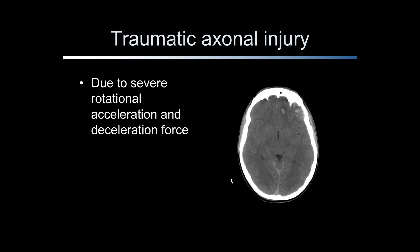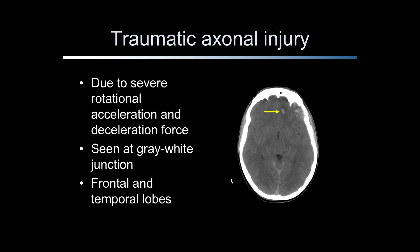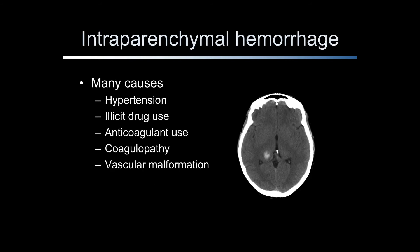Traumatic axonal injury, formerly called shear injury, occurs from severe rotational, acceleration, and deceleration forces to the brain. It is usually seen at the gray-white matter interface and most commonly occurs in the frontal and temporal lobes. Hemorrhagic traumatic axonal injuries appear as collections of acute blood a few millimeters to several centimeters in size. 25% of axonal injuries are hemorrhagic. Non-hemorrhagic axonal injuries may be difficult to see on CT scan and are better visualized on MRI. Intraparenchymal hemorrhage may be due to hypertension, illicit drug use, anticoagulant use, coagulopathy, or vascular malformation. The most common cause is hypertension.